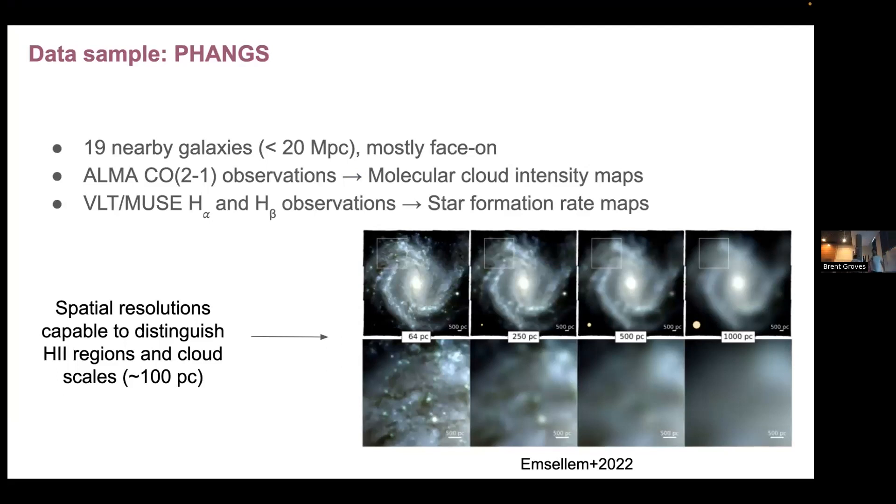So in order to compute the star formation efficiency, we are going to make use of 19 nearby galaxies. These nearby galaxies have distances lower than 20 megaparsecs and one characteristic is they're mostly face-on so that way we avoid to observe only the edge.